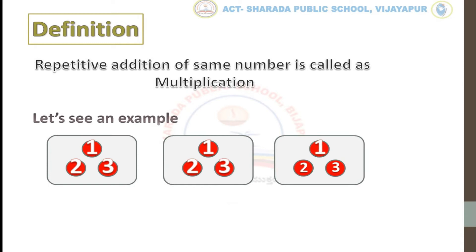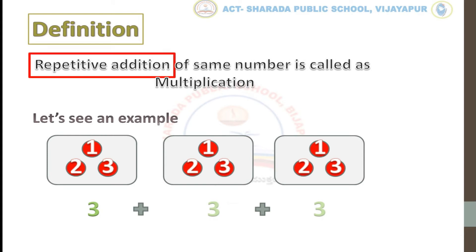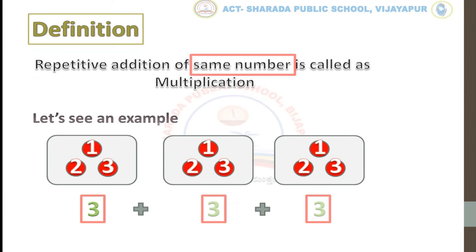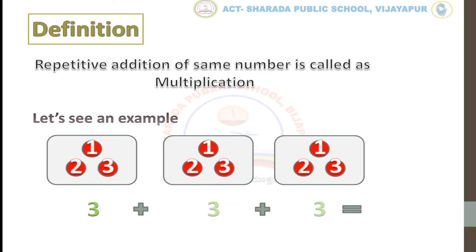Now we have to find the total balls in the box. Let's see: 3 plus 3 plus 3. It seems like repetitive addition of the same number. When we add these numbers, we will get 9.